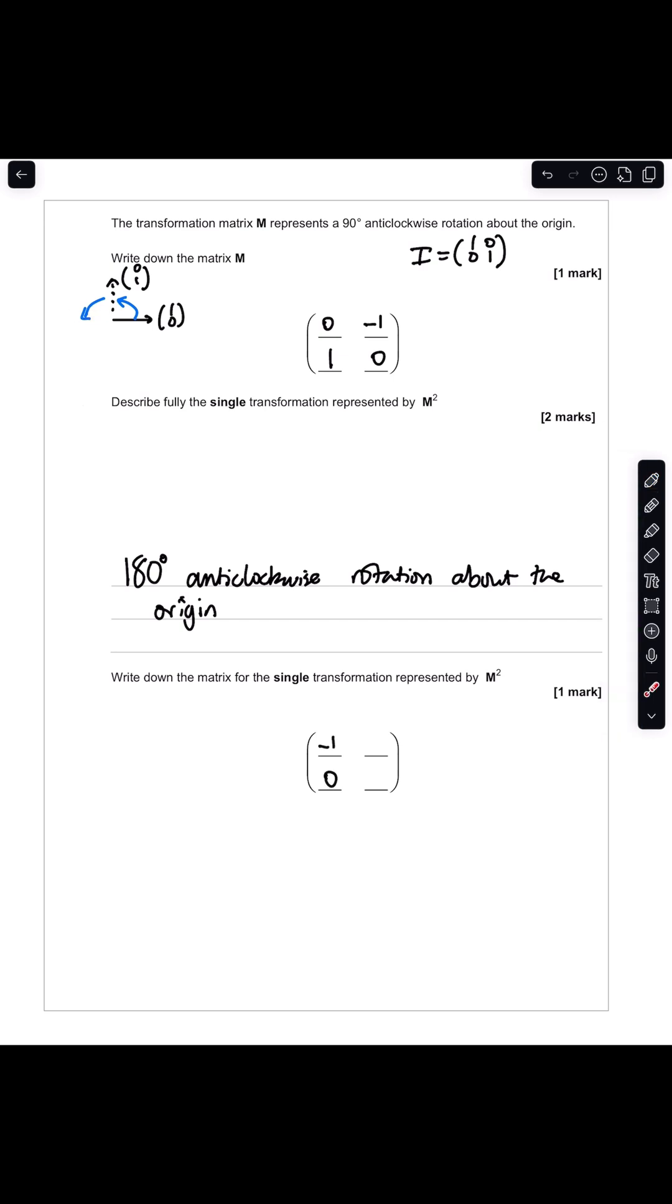And where I once had negative 1, 0 after the 90 degrees anti-clockwise rotation, taking it from this point, 0, 1 to negative 1, 0, this will now become 0, minus 1. So your answer is negative 1, 0, 0, minus 1.